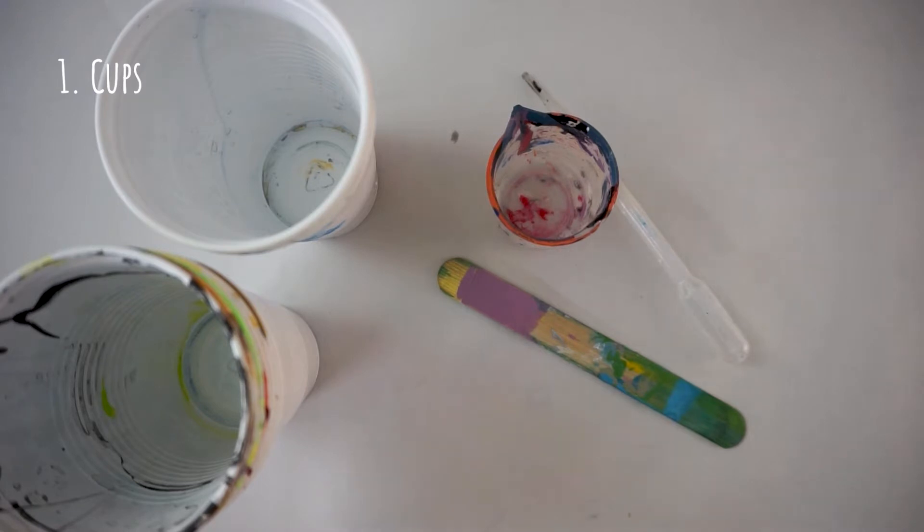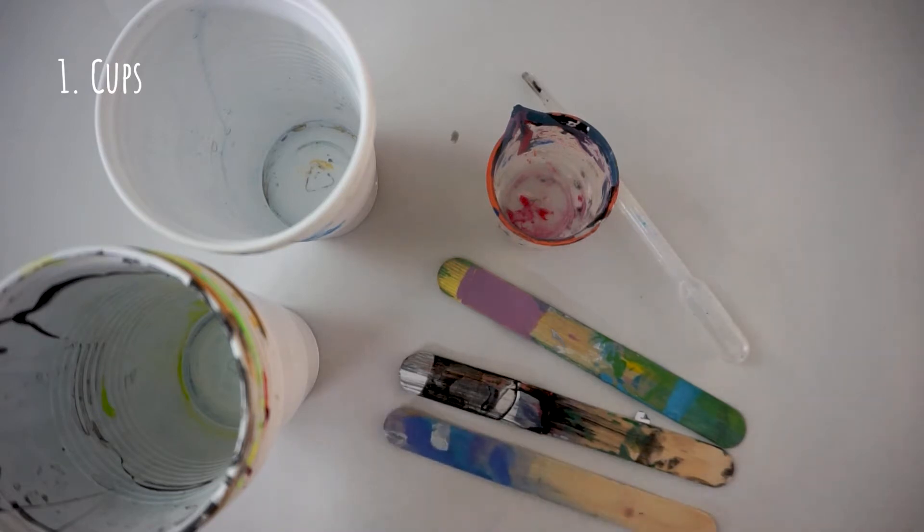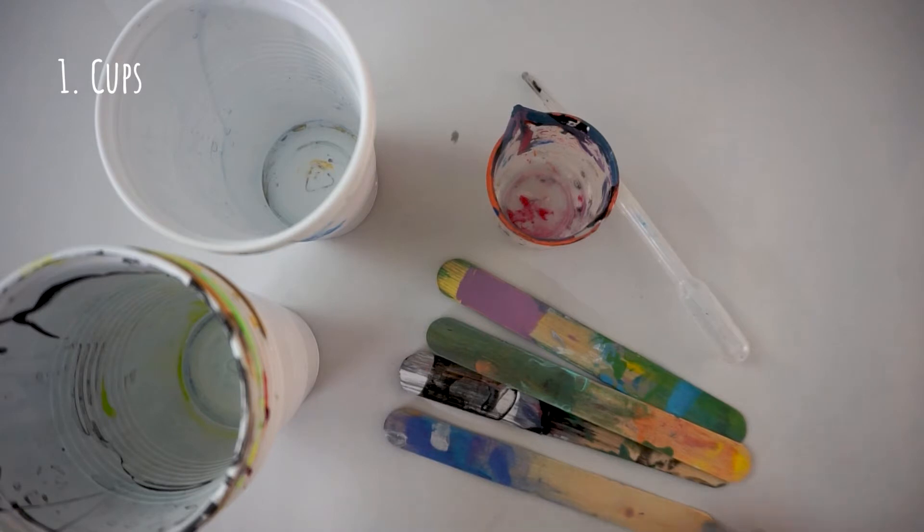Extra tip for actually cleaning these: it's recommended that when you put water in to get the paint out, that you dump it somewhere on your grass so it'll help filter things out so they don't go into the water supply. They're pretty easy to clean out. You can sometimes use silicone spray on them to make them even easier. I don't personally like to do that because I don't like to use silicone in my paintings.